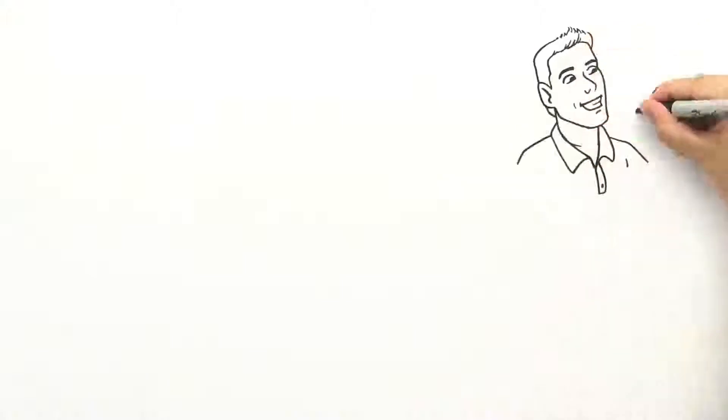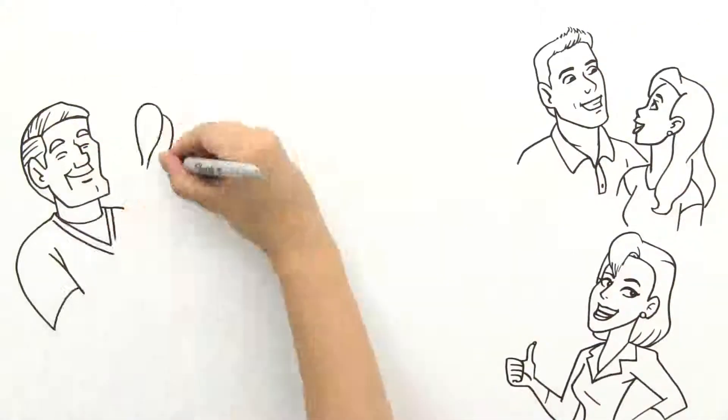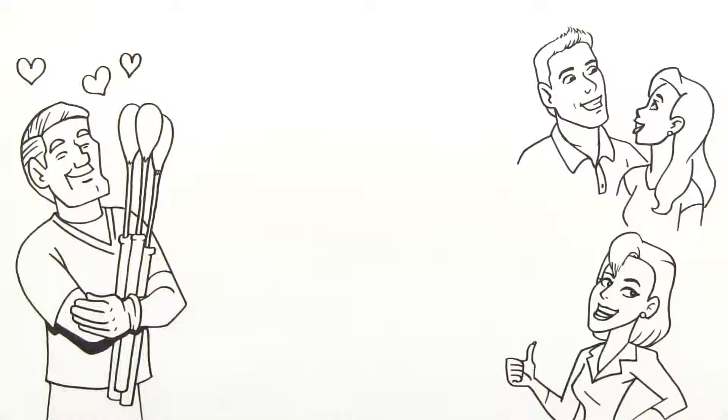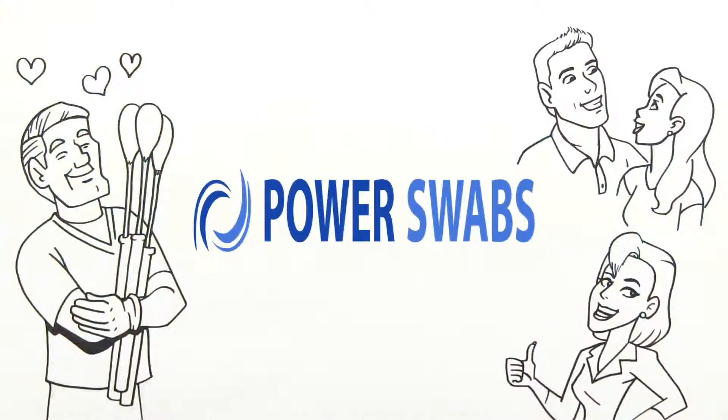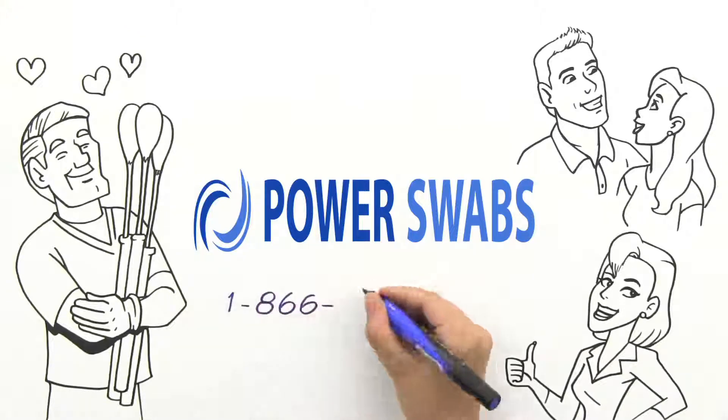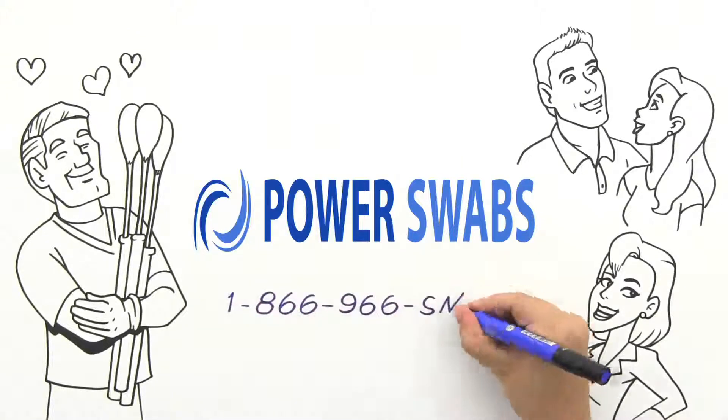The best part is, you can order Power Swabs right out of the privacy of your own home. Don't hesitate, get rid of the stains for good simply by calling 1-866-966-7645.